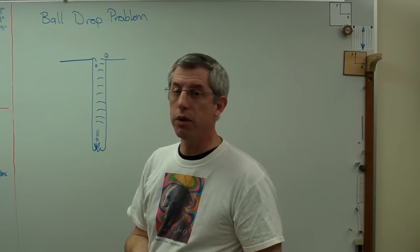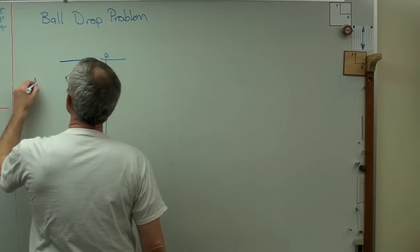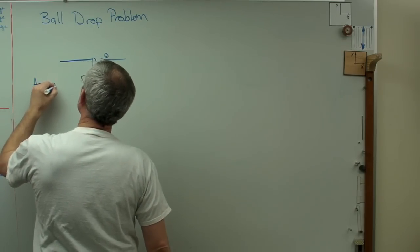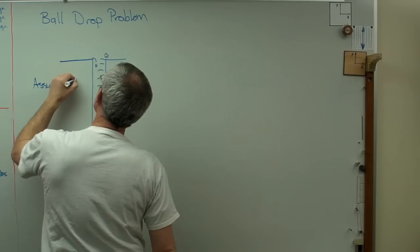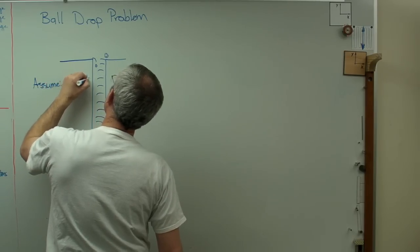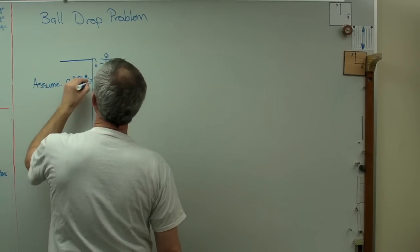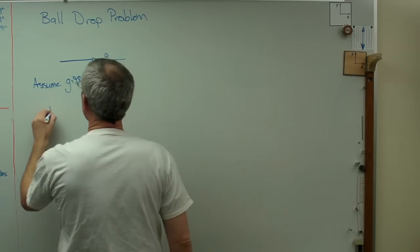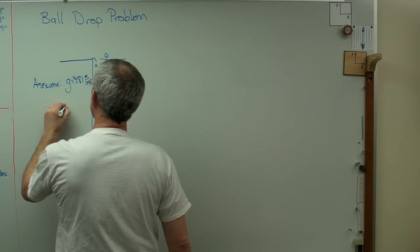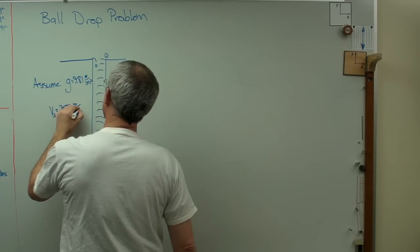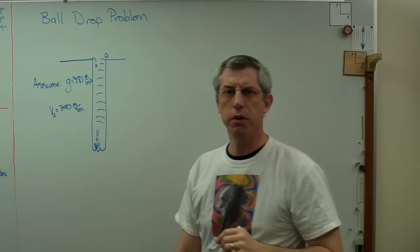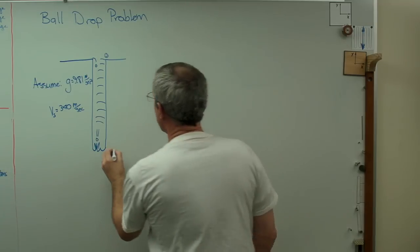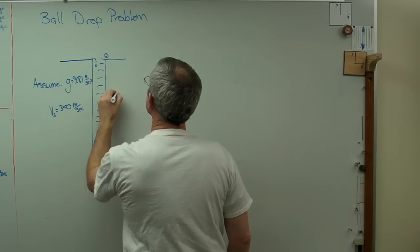We're going to need to know the speed of sound. Let's assume that g is 9.81 meters per second squared and the speed of sound is 340 meters per second. Those are pretty good numbers. Let's also assume the depth of the well is d, though we don't know what that is yet.